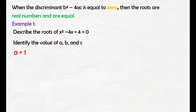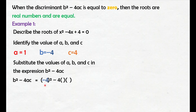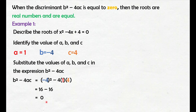Yung a natin is 1, yung b is negative 4, and c is positive 4. Then substitute the values of a, b, and c in the expression b squared minus 4ac. So, b squared minus 4ac is equal to: negative 4 squared, that is 16. Negative 4 times 1 times 4, that is negative 16. And 16 minus 16, that is equal to 0.